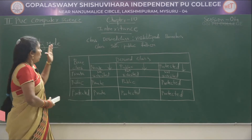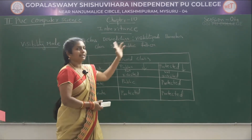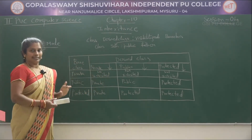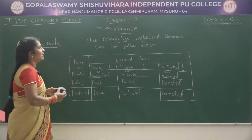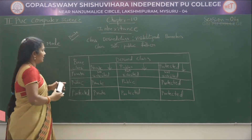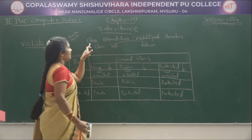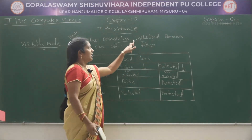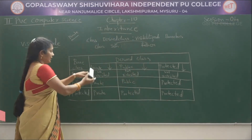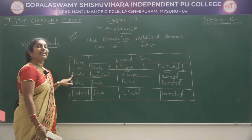Visibility mode will control the access specifiers of the base class in the derived class. Now for private inheritance: the syntax is class, derived class, colon, visibility mode, then base class. In private inheritance, if the base class members are private, they cannot be inherited in the derived class.